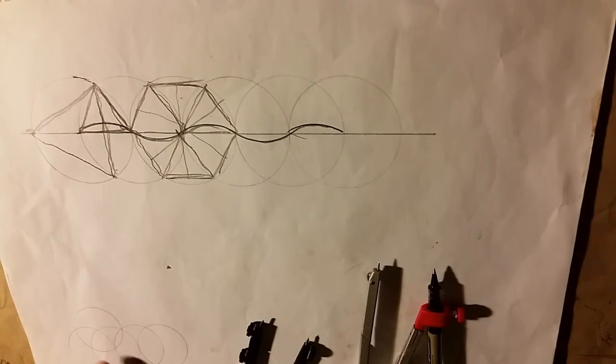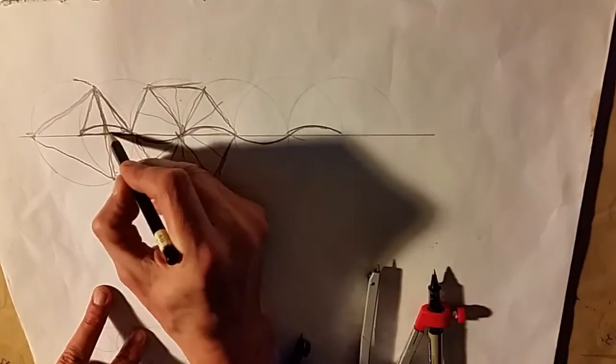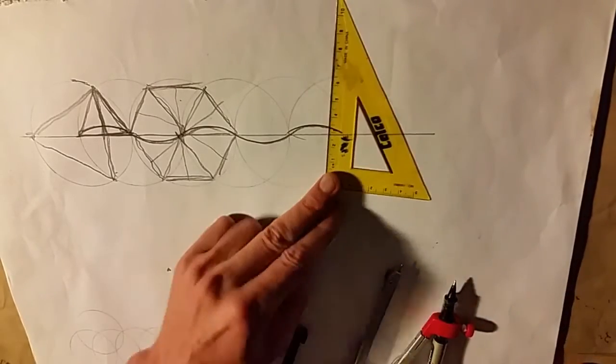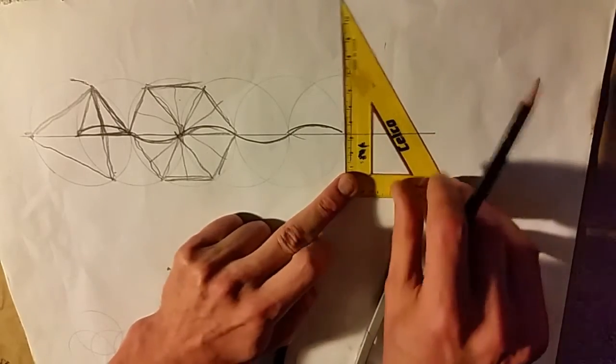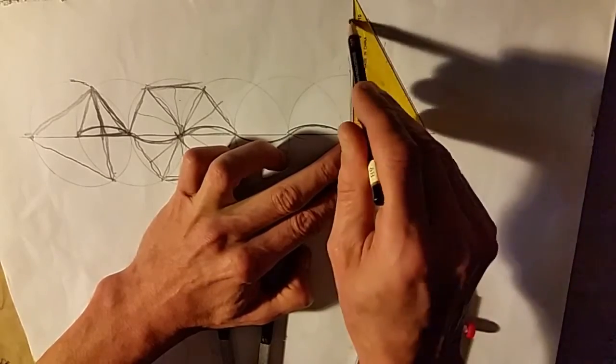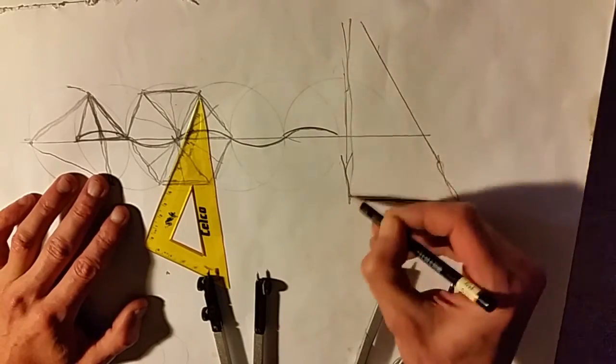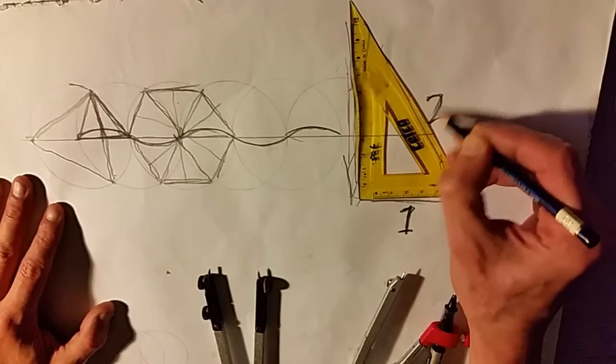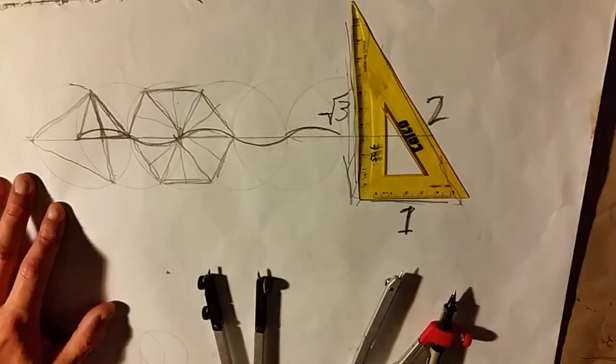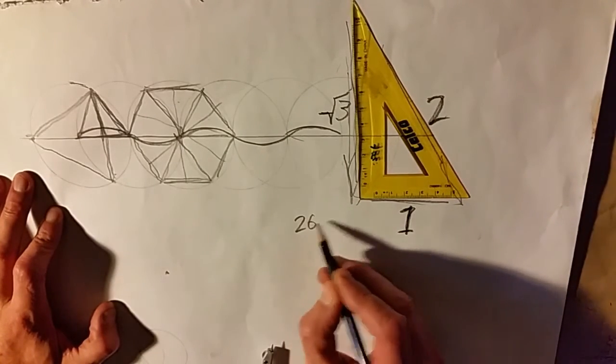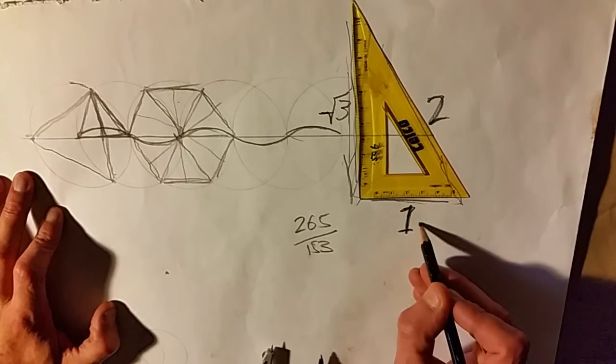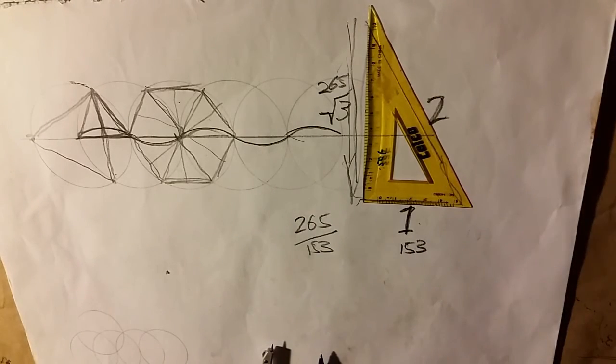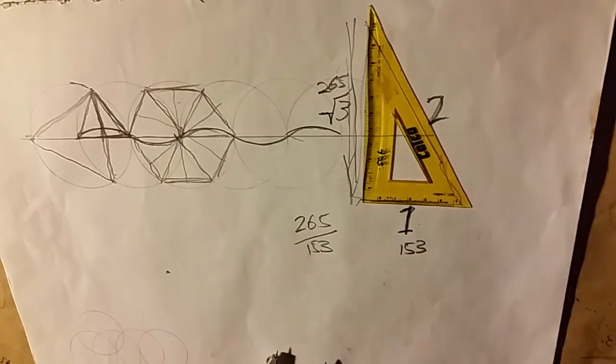What's really underneath all of it, since we have the 30, 60 set square here, what we have is a ratio of one, two, and the square root of three, which in whole numbers is equal to 265 over 153. That's the ratio which is inside all of these equilateral triangles and underneath hexagons.